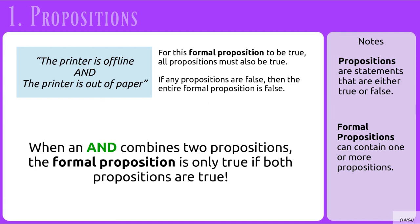When AND combines two propositions, the formal proposition is only true if both propositions are true. If either of them are false, then the entire formal proposition will be false.